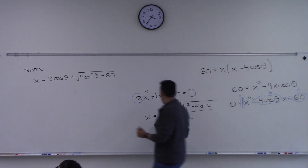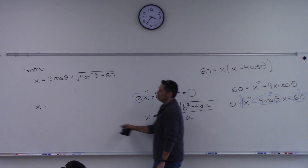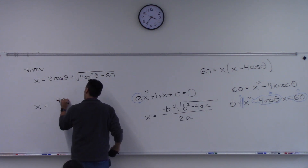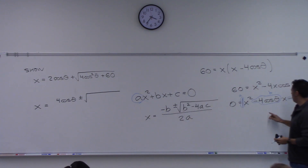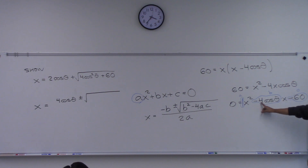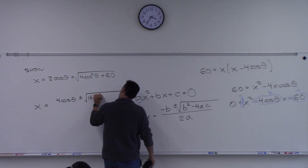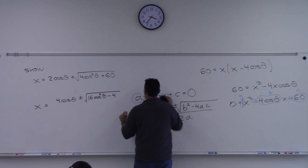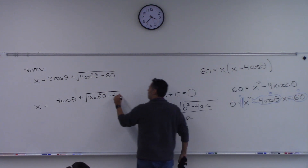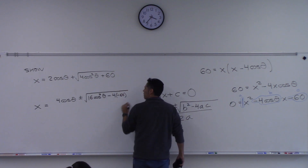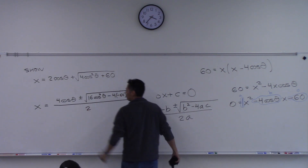Applying the formula: x equals negative b — which is positive 4 cosine theta — plus or minus the square root of b squared minus 4ac. B squared is 16 cosine squared theta. Then minus 4 times a (which is 1) times c (which is negative 60), giving plus 240. All divided by 2 times 1, which is just 2.